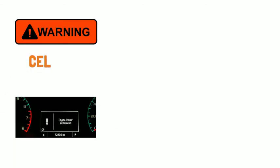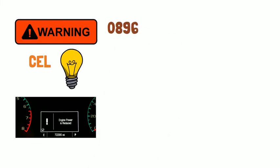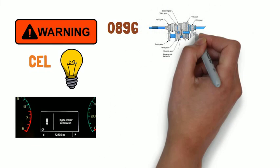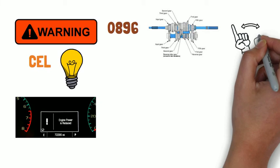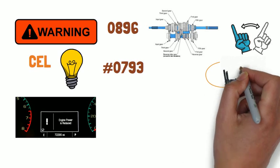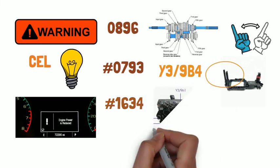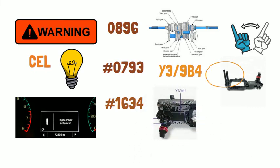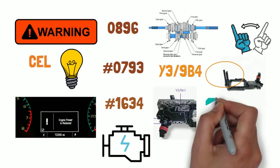Whenever an internal malfunction occurs, the vehicle will go into limp home mode and the CEL warning light will come on. The common fault code in this case is 0896, which means an impermissible adjustment of the step-down ratio in the CVT. Code 0793 means RPM sensor Y39B4 needs replacement. Code 6034 means you need to replace CVT component Y39N1 or the voltage supply has failed. Once you notice these symptoms, find a trusted repair shop.